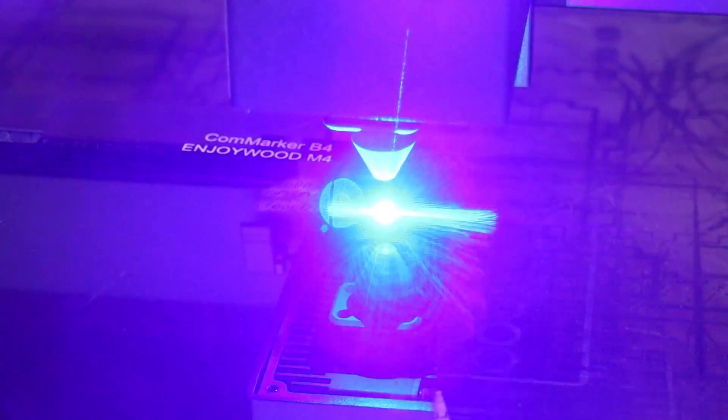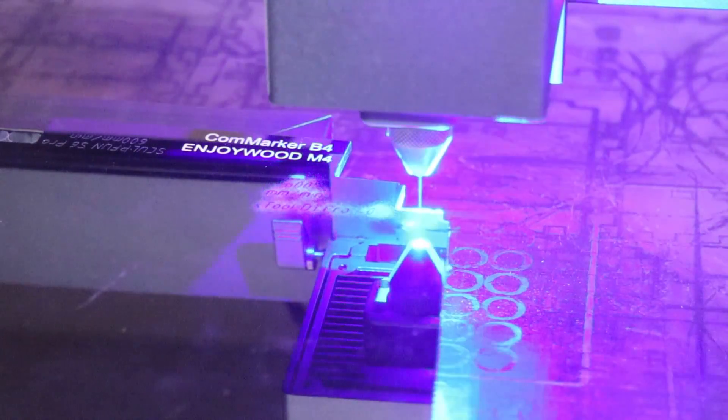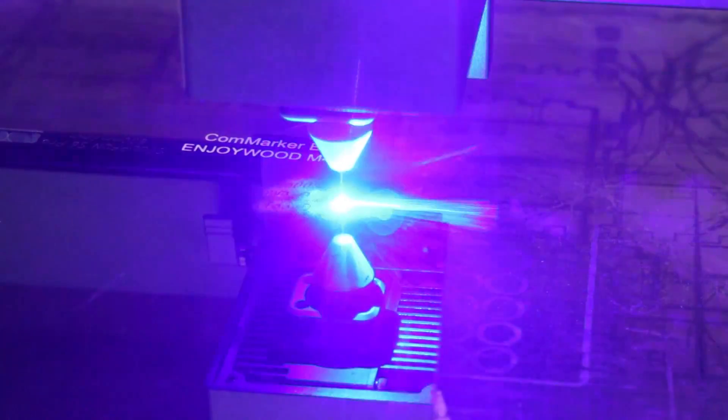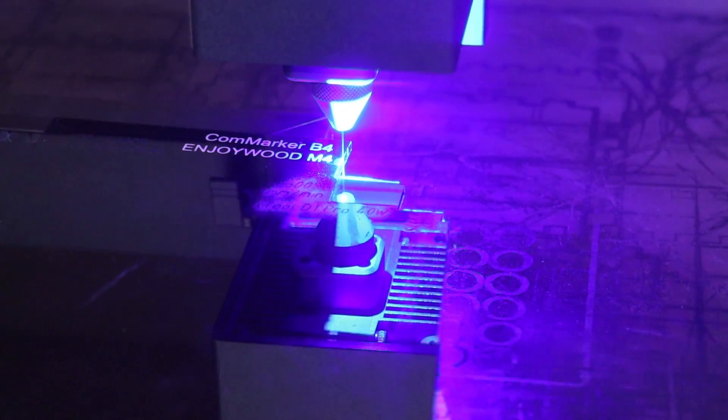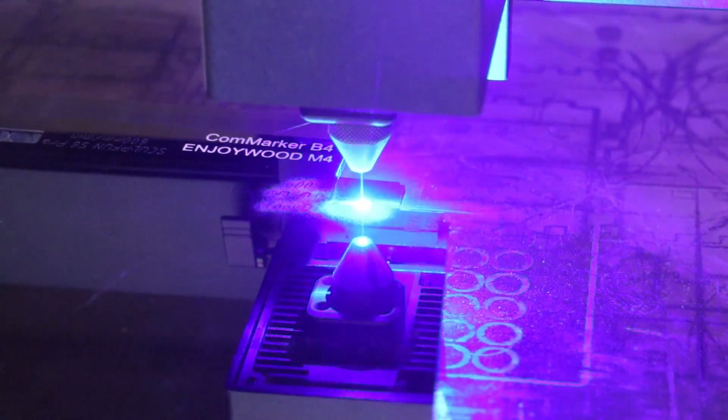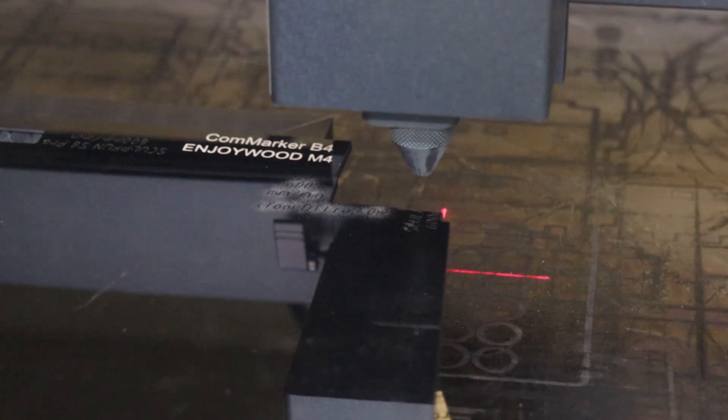Next on the list was the black acrylic cutting test. This machine cuts acrylic very well, but note that transparent and white colors can't be cut with any blue diode laser. It was able to cut the 3mm acrylic in approximately one and a half passes.